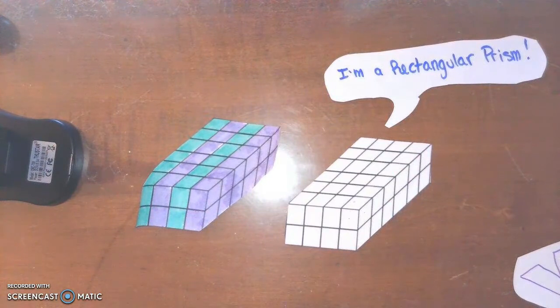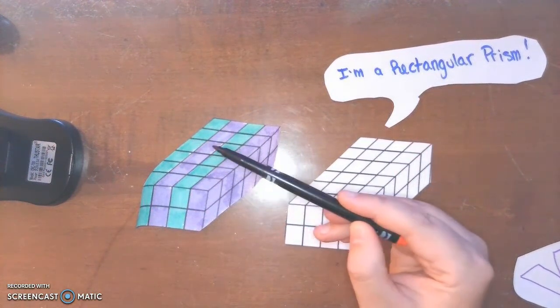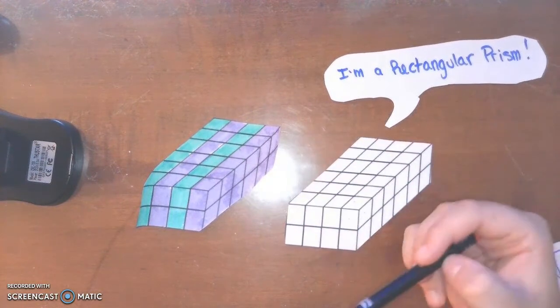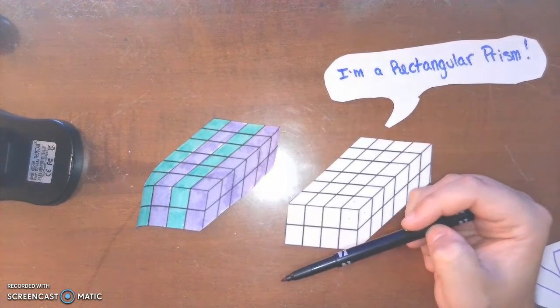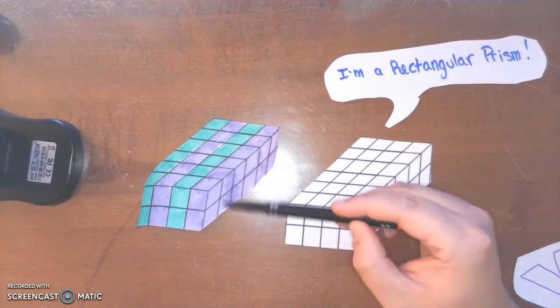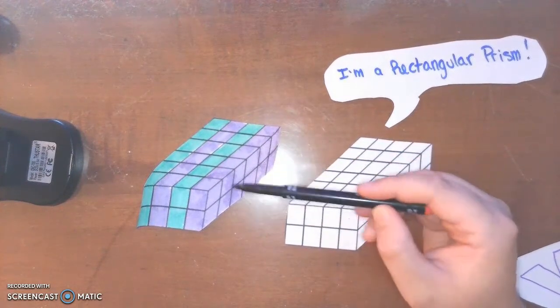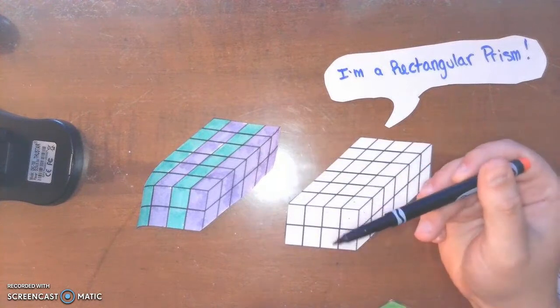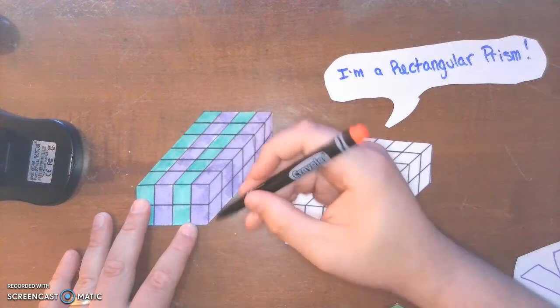So in this case I saw that there were a total of four layers of unit cubes in this prism. And in order to determine how many cubes are in each layer, I concentrated on this layer that I can see the most of, which is right here. And then I can simply count all the cubes that I see in this layer.